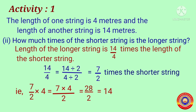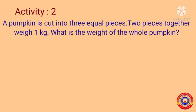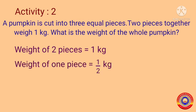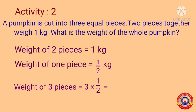Next, Activity number two. A pumpkin is cut into three equal pieces. Two pieces together weigh one kilogram. What is the weight of the whole pumpkin? The weight of two pieces is equal to one kilogram, therefore the weight of one piece is equal to one-by-two kilogram.